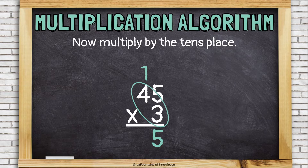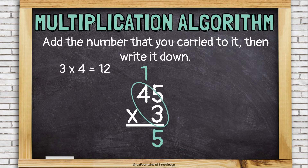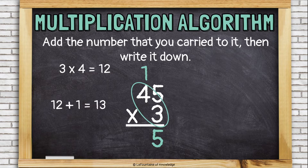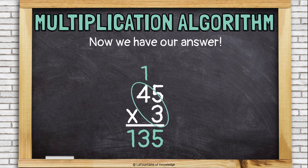Now, I'm going to multiply the tens place. So I'm going to do 3 times 4, which is 12. But before I write it down, I have to add that number that I carried — that 1 — to it. So 12 plus the 1 that I carried is 13. And that is what I will write down to record my answer, which is 135.